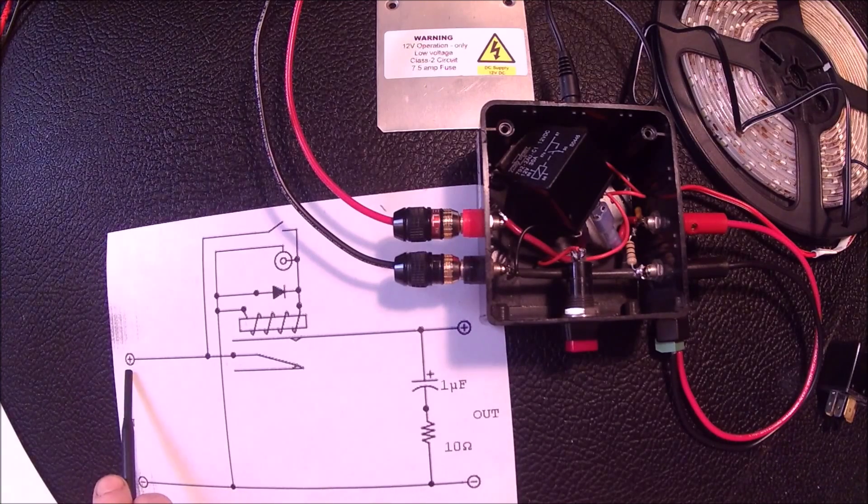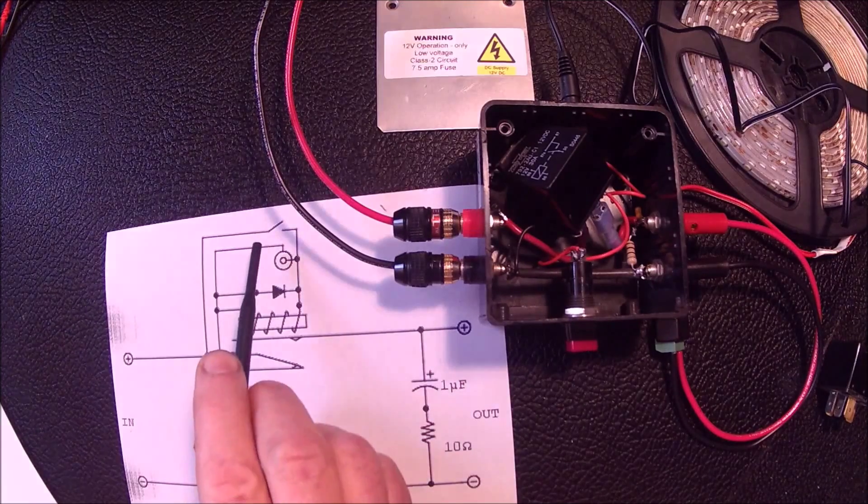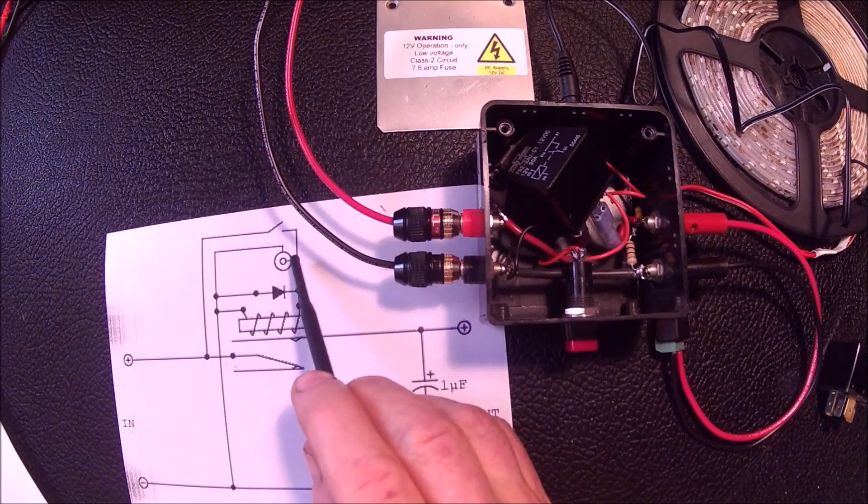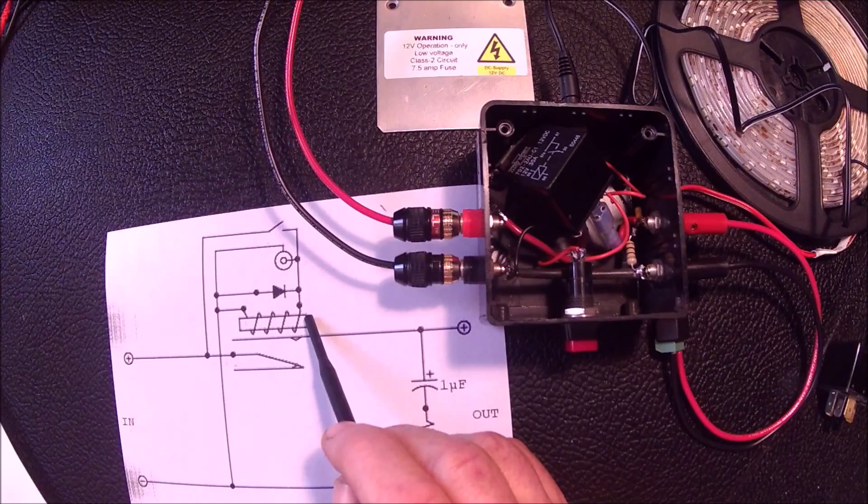The incoming positive connection goes to the relay 30 terminal here as well as one side of this switch. The other side of the switch and the remote positive input run to the other side of the relay coil.